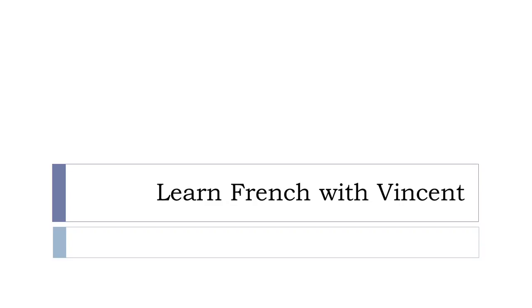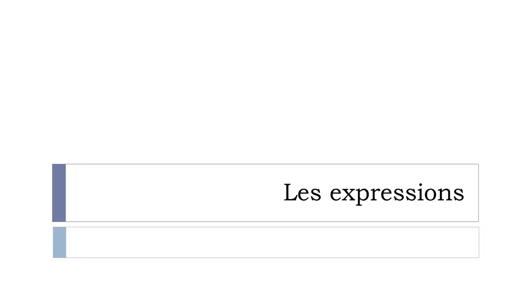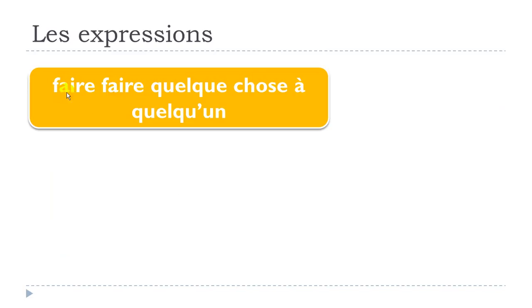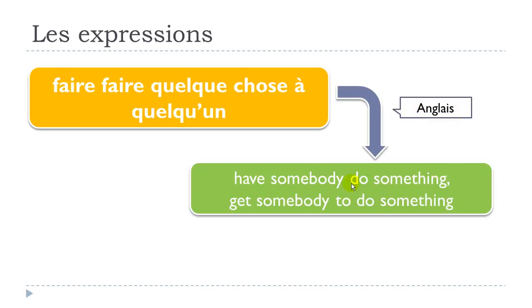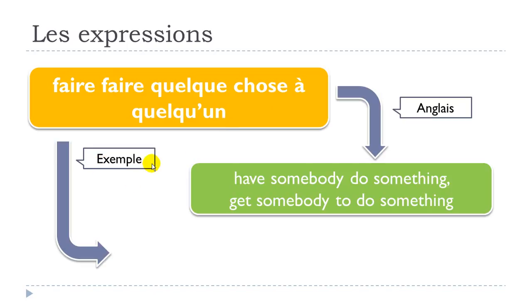Bonjour à tous and welcome to Learn French with Vincent. In this video we'll look at a French expression: 'faire faire quelque chose à quelqu'un' — with two instances of the verb 'faire'. The translation in English is shown here, and let's see one example now.